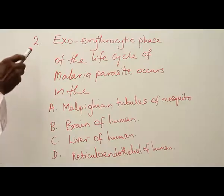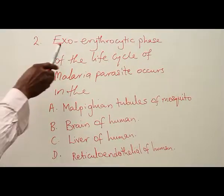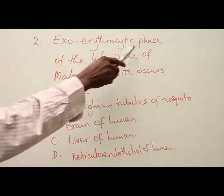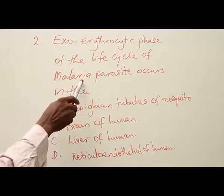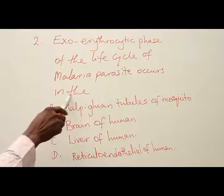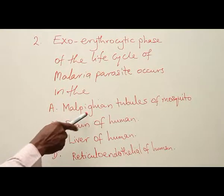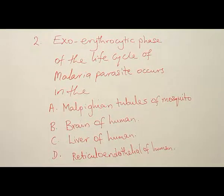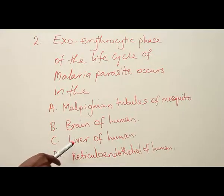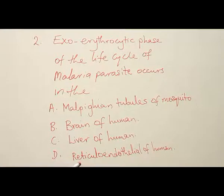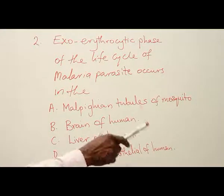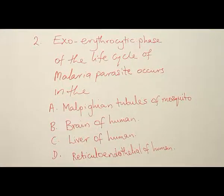Example two: The exo-erythrocytic phase of the life cycle of the malaria parasite occurs in the — A) Malpighian tubules of mosquito, B) brain of human, C) liver of human, D) reticuloendothelial nature of human.